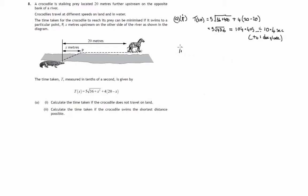Let's now look at part 2: calculate the time taken if the crocodile swims the shortest distance possible. We'd already said that the shortest distance is along this line where the landing point p is on this perpendicular line to the bank. x would be 0. So we work out the time taken when x is 0. That's 5 times the square root of 36 plus 0, 0 squared is 0, plus 4 times 20 minus 0.